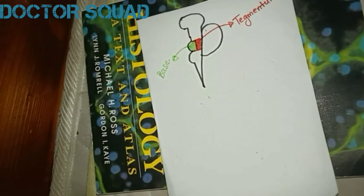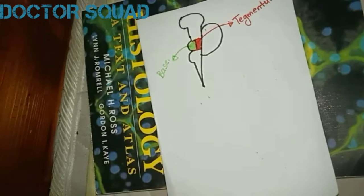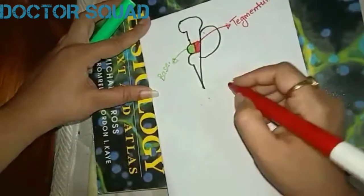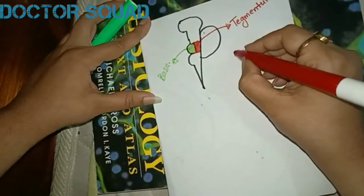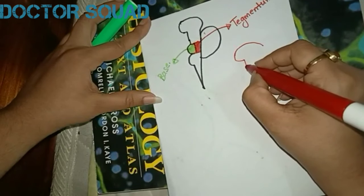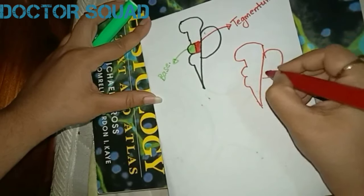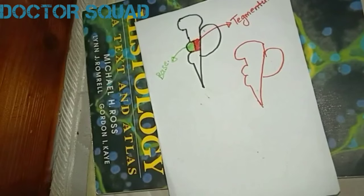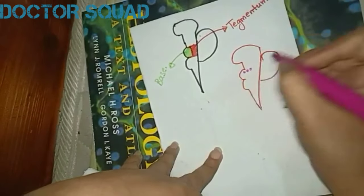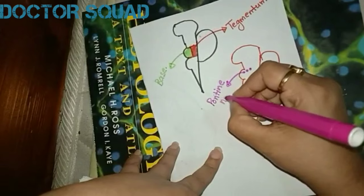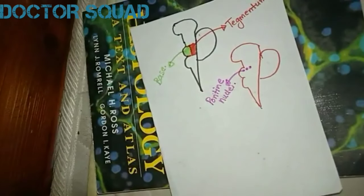Now I will tell you about the fibers. Before that, there is one nucleus found in the pons known as the pontine nuclei. It is located within the pons structure. That's why the pons is also referred to as pontine.